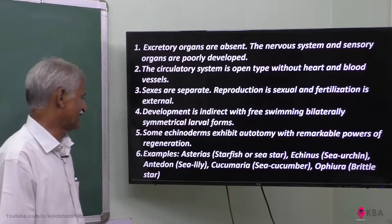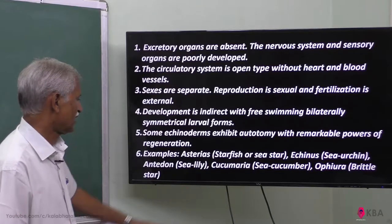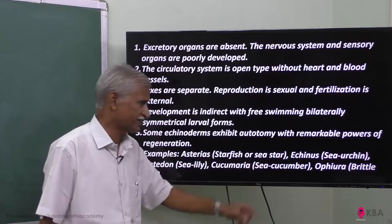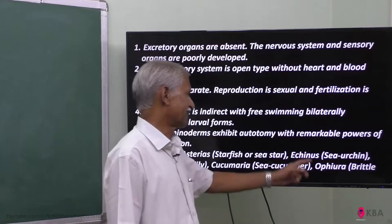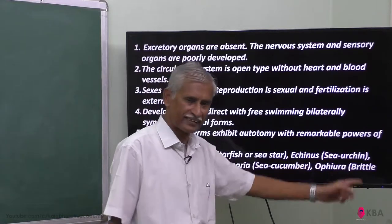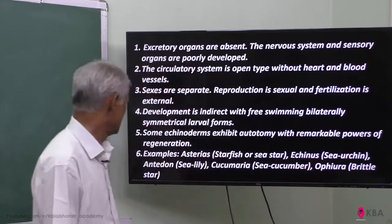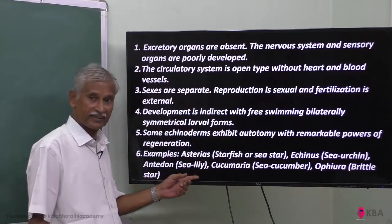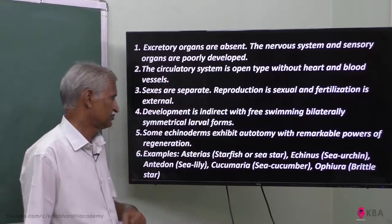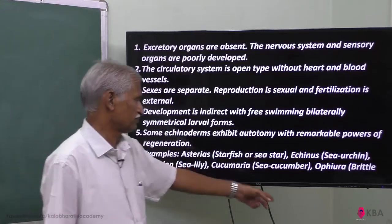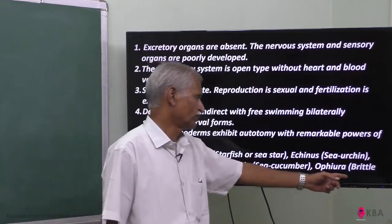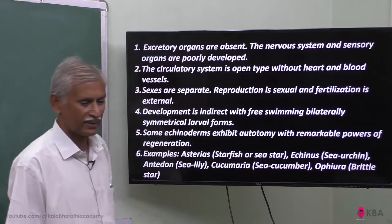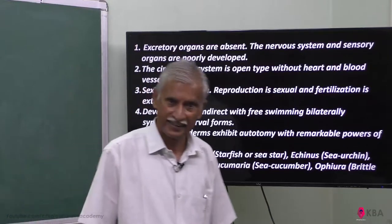Examples include Asterias, that is starfish; Echinus, which is a sea urchin; Antedon, the sea lily; sea cucumber; and Ophiura, the brittle star. These are all examples of Echinoderms.